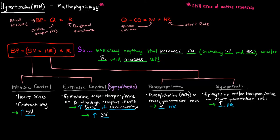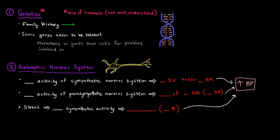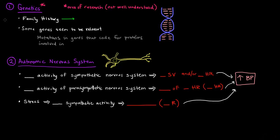The pathophysiology of hypertension is still an active area of research, and not everything is well understood — specifically genetics. We know that family history is important: if your parents or grandparents had hypertension, you may be at higher risk, suggesting some form of inheritance. Although not fully understood, certain genes appear to be relevant.